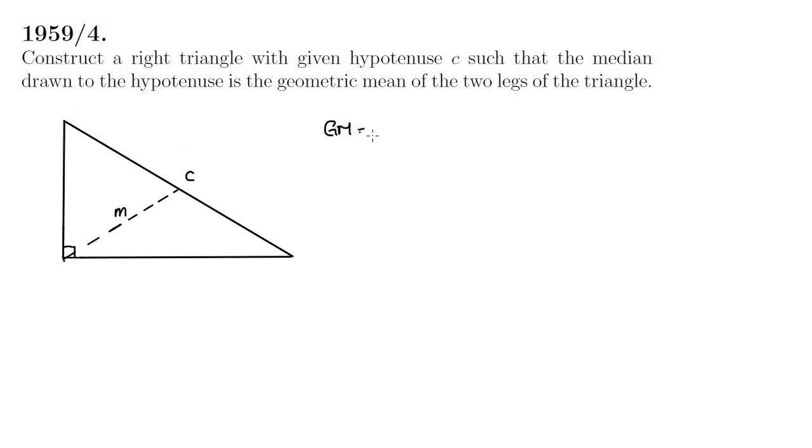Let's begin by recalling the definition of geometric mean which is the nth root of the product of n numbers which can be expressed in formula like so. In our case n is equal to two because we have two legs or two elements.